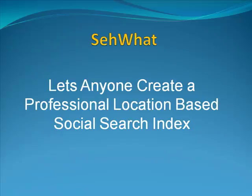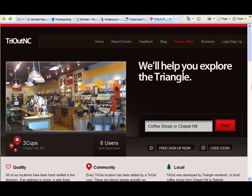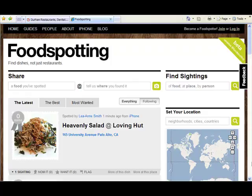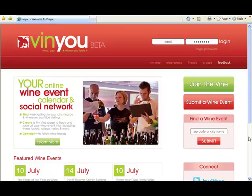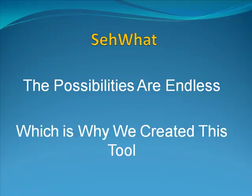Some examples of location-based social indexes are Yelp — lots of people use Yelp to find restaurants all over the United States. But TryoutNC focuses on just restaurants in the Research Triangle of North Carolina. Food Spotting lets you find specific menu items instead of just restaurants, while Venue helps you discover wine tastings near you. By now you can see the possibilities are pretty much endless, which is exactly why we created this tool.